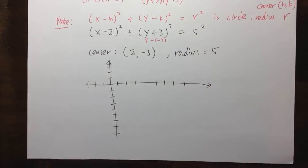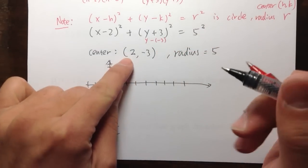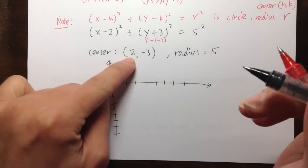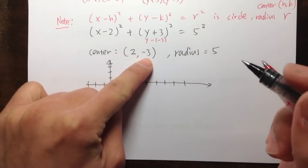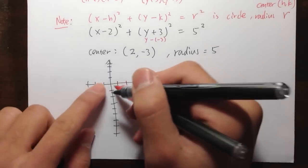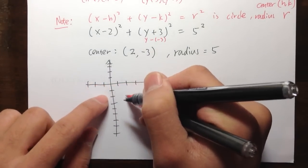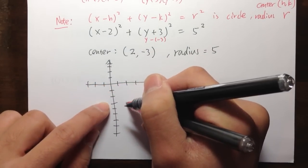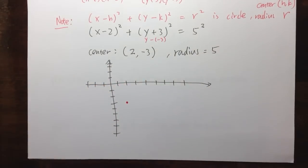Go to the center first — it's at (2, negative 3). Go 1, 2 to the right, and then 1, 2, 3 down. And that's the center.